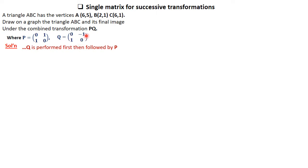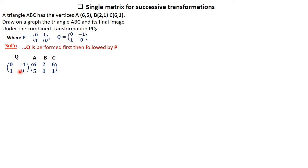Having gotten the image from Q, that image is then subjected to the second matrix P, and that order must be followed. We have Q times the coordinates of triangle ABC — this is matrix Q and this is triangle ABC — which gives us the coordinates of A'B'C' under the transformation of Q, and the coordinates are the ones on the screen.